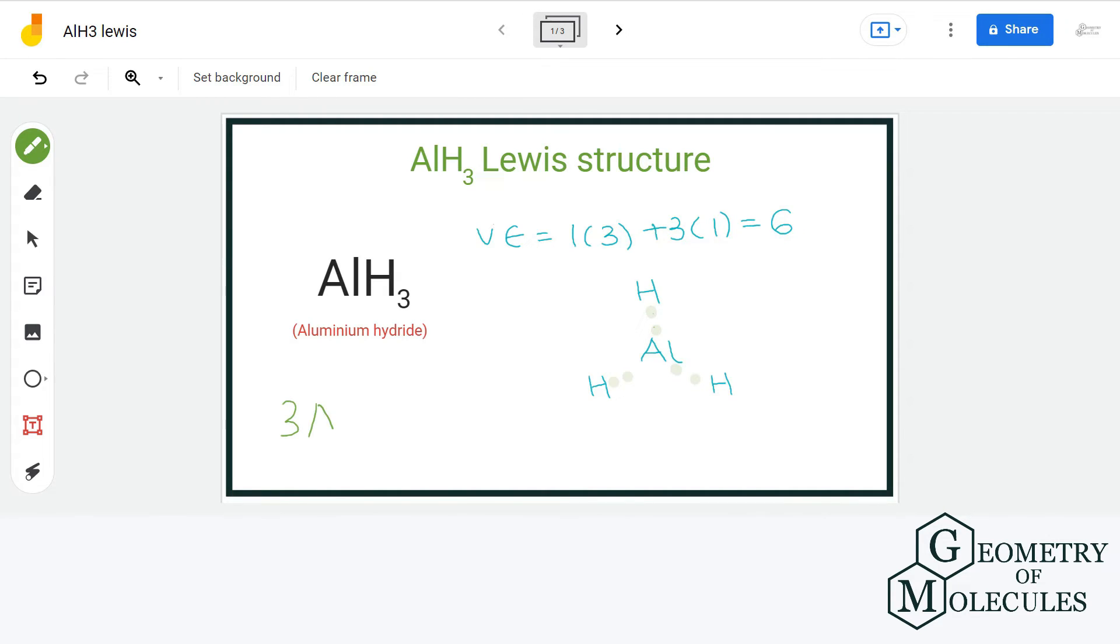Some compounds that they form instead follow sextet rule, meaning that they form stable compounds with six electrons in the outermost shell.